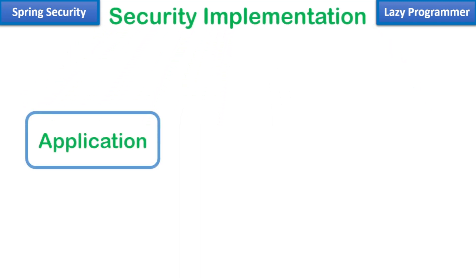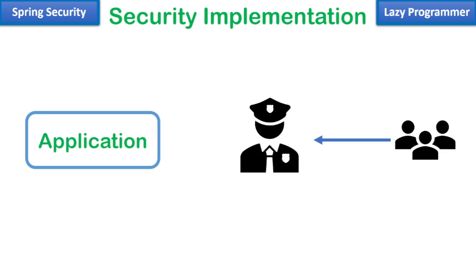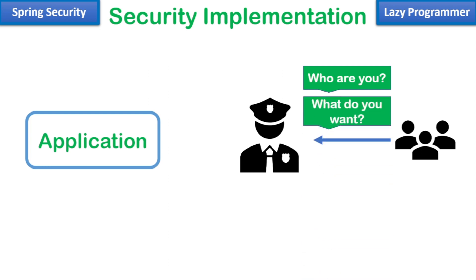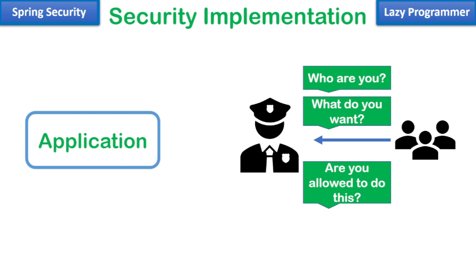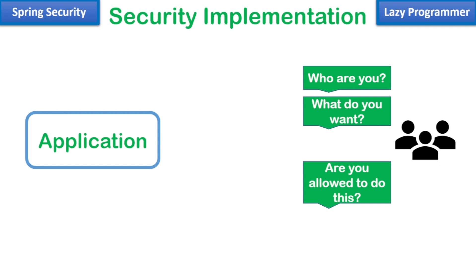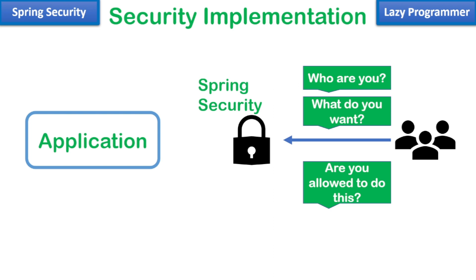You do not want to handle security on your own, so you need to take help from someone who can act as a guard for your application. Any request coming from outside will have to go through that particular guard, and the guard will make sure to ask: who is the user, what do they want, and are they actually authorized to access those particular resources? Once all these questions are answered correctly, the guard will let the user use those resources.